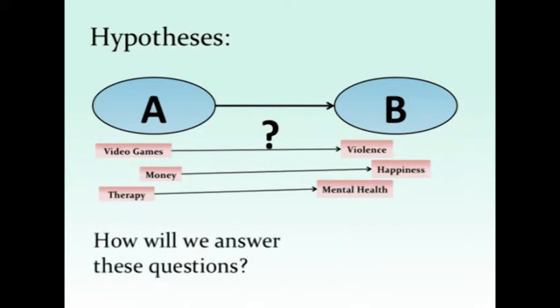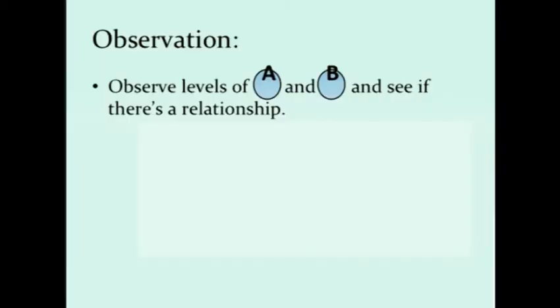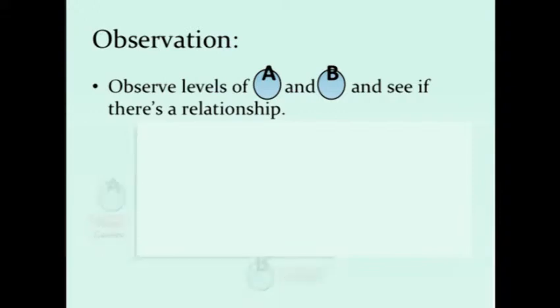So how do we answer these questions? How do we search for these relationships between variables? The most natural answer is that you could observe. Most people will tell you: why not simply measure levels of A and levels of B, and see whether or not people who are high in A are also high in B? If we look at observation, the idea is that we observe the levels of A and B and see if there is a relationship.